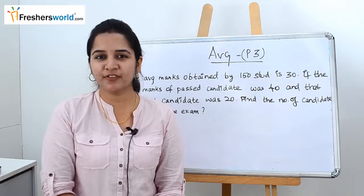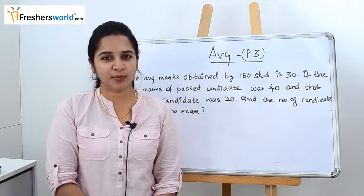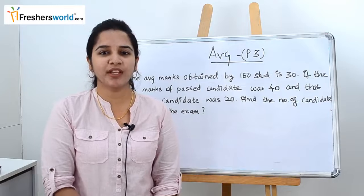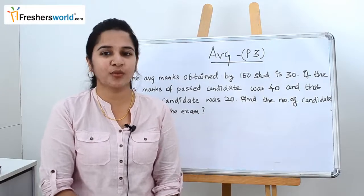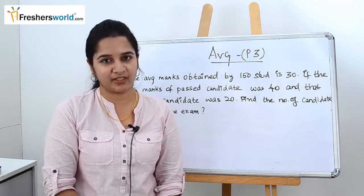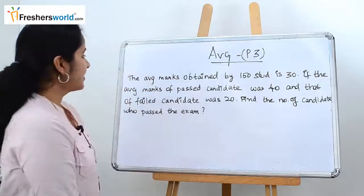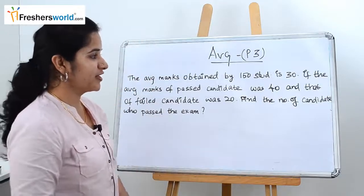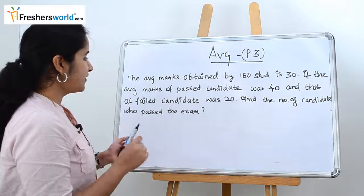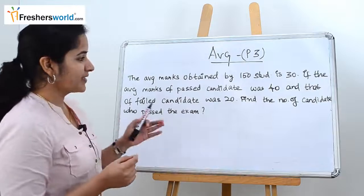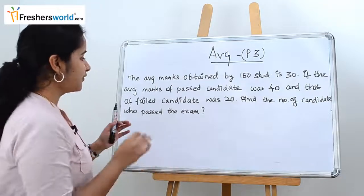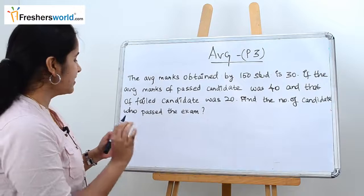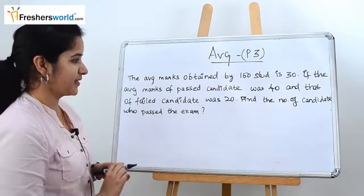In the previous part of averages we dealt with simpler problems. From now on we will be going into much tougher problems to understand the overall concept better. The first question is: the average marks obtained by 150 students is 30. If the average marks of the passed candidate was 40 and that of the failed candidate was 20, find the number of candidates who passed their exams.